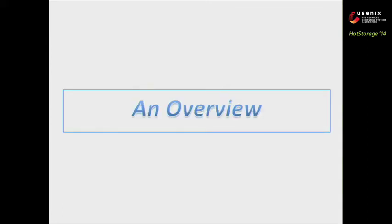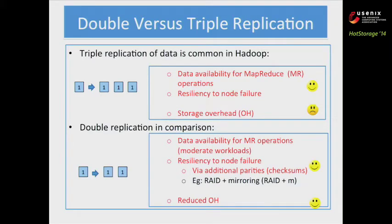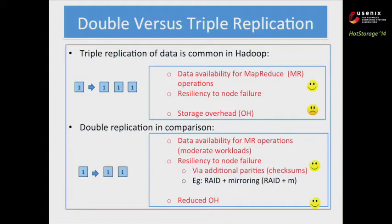I'll start with an overview of the talk. This talk is about Hadoop, and we all know that in Hadoop we commonly employ triple replication for data storage, which has two important advantages. The first advantage is good data availability for MapReduce computation, and it also ensures good resiliency to node failures. However, this has a big downside: huge storage overhead. In comparison, if Hadoop had only two copies of each block, you would save substantially on storage overhead, and because there is a copy, it will also have good data availability at moderate workloads. So this talk is about Hadoop systems that use only two copies of data blocks.